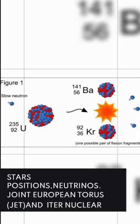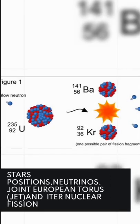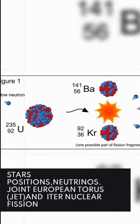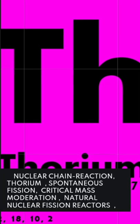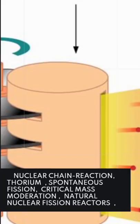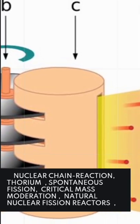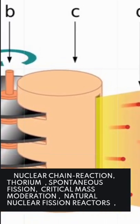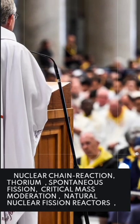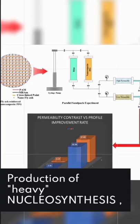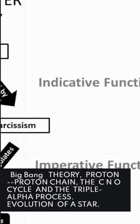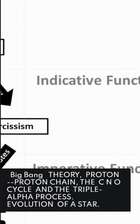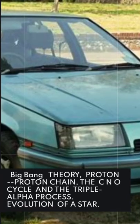Nuclear fusion in stars involves positrons, neutrinos, and facilities like the Joint European Torus (JET) and ITER. Nuclear fission topics include nuclear chain reactions, criticality, spontaneous fission, mass moderation, natural nuclear fission reactors, and the production of heavy elements through nucleosynthesis.